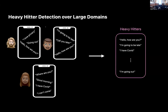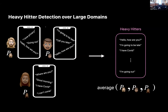Our goal is heavy hitter detection in very large domains. We have a bunch of users who have data on their device, and our goal is to learn what the popular data points are. When users have many data points on device, this is a little bit of an ill-defined problem. Something can be called a heavy hitter if a lot of users have that data point, or if it's very popular for some of the users. What we're going to say is something in the middle — every user has some distribution of the data on their device, and heavy hitters are heavy hitters in the average distribution. You have to be popular for a lot of people to be popular in this metric.